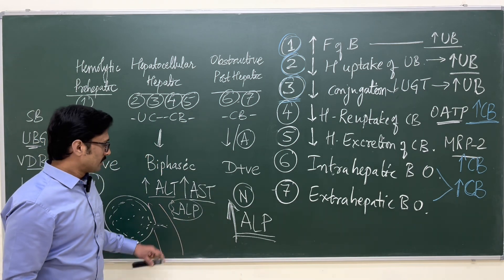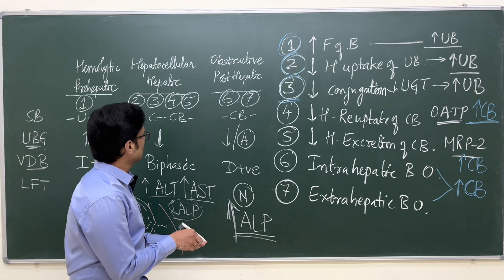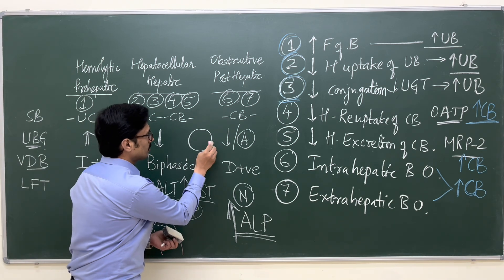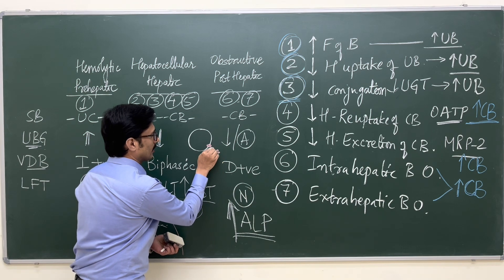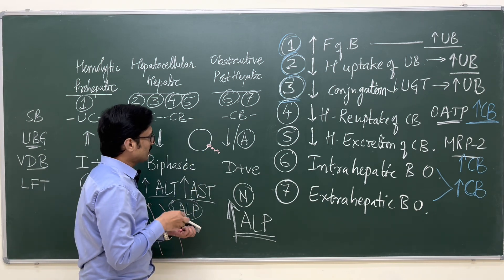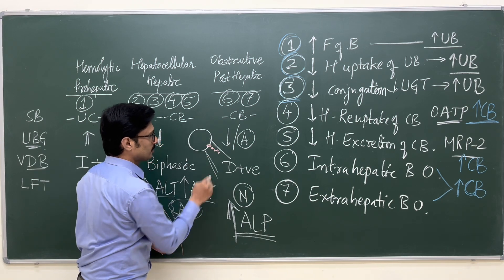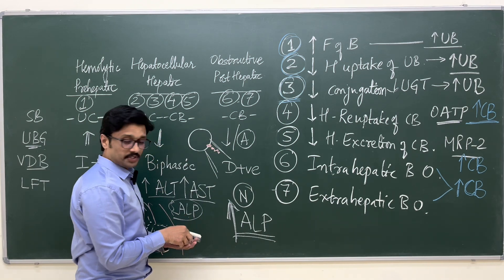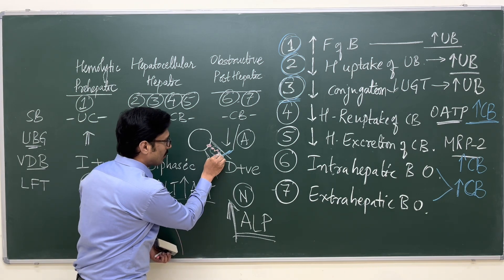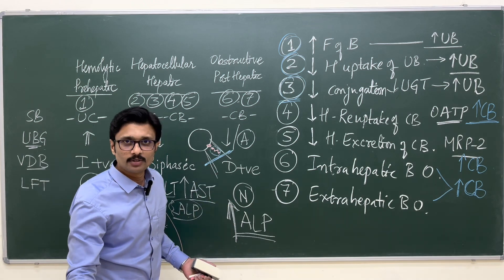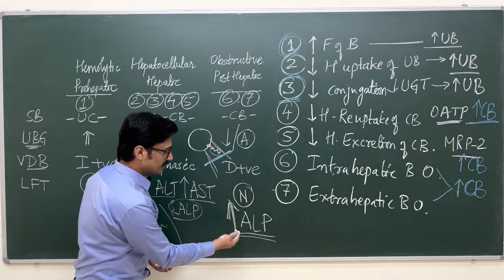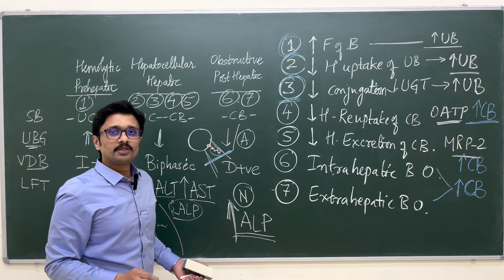Alkaline phosphatase is a glycoprotein — a membrane-bound glycoprotein present on the outside of the cell. This enzyme is normally excreted through the biliary canaliculi. If there is any obstruction to the biliary canaliculi, this membrane-bound alkaline phosphatase cannot be excreted. It gets accumulated and spills over into the systemic circulation, causing an increase in blood levels of alkaline phosphatase whenever there is obstruction to bile outflow.